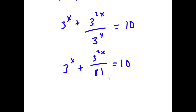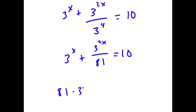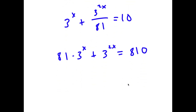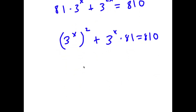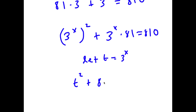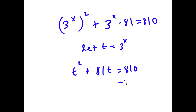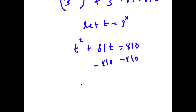Now I'm going to multiply both sides by 81. So I have 81 times 3 to the power of x plus 3 to the power of 2x equals 810. Now 3 to the power of 2x is the same thing as 3 to the power of x, squared. So I have 3 to the power of x squared plus 81 times 3 to the power of x equals 810. Letting the variable t equal 3 to the power of x, I have t squared plus 81t equals 810. Subtracting 810 from both sides gives t squared plus 81t minus 810 equals 0.